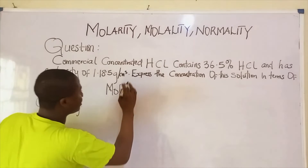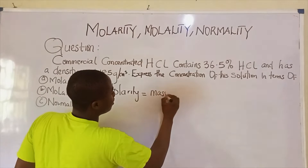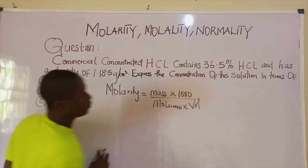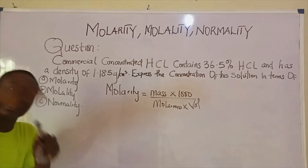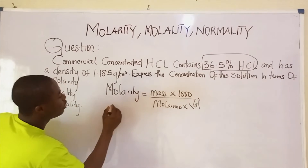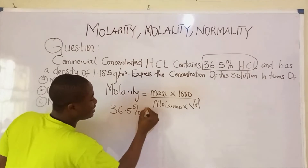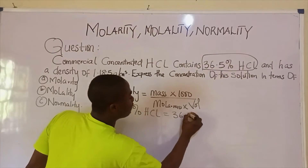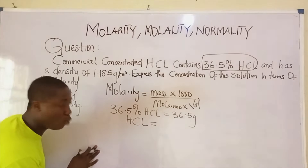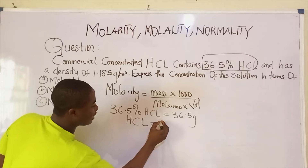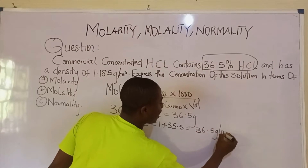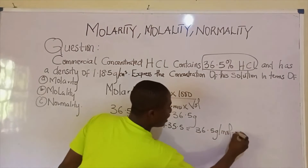Recall from my previous video, the formula for molarity is: mass × 1000, all over molar mass × volume. In chemistry, the percentage of a compound can be taken as the mass, so 36.5% HCl is the same as 36.5 grams of HCl. The molar mass of HCl is: hydrogen (1) plus chlorine (35.5), giving a molar mass of 36.5 grams per mole.